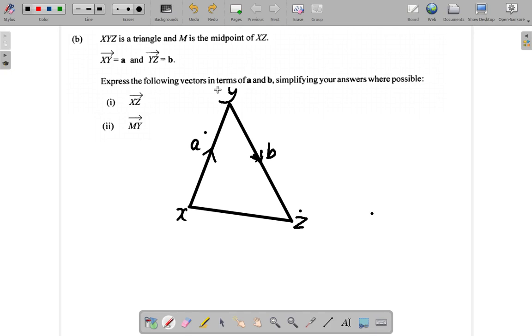Express the vectors in the form of A and B, simplifying your answer where possible. XZ. The thing is, XZ goes this way.